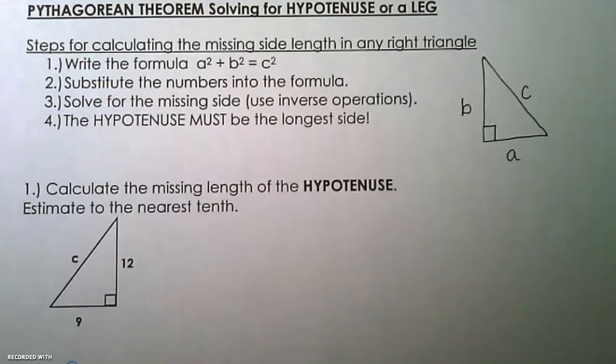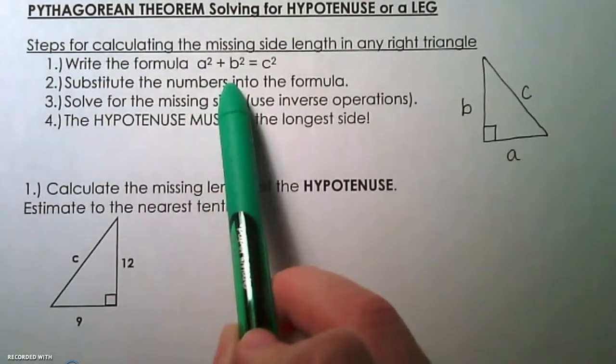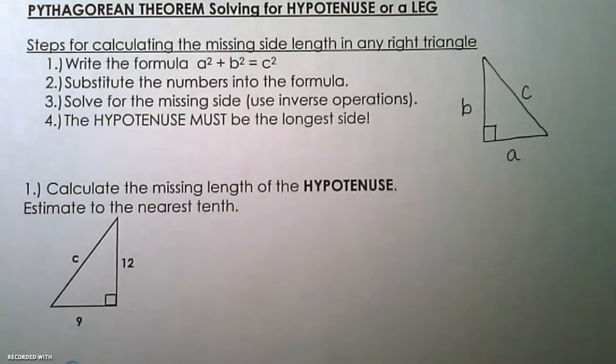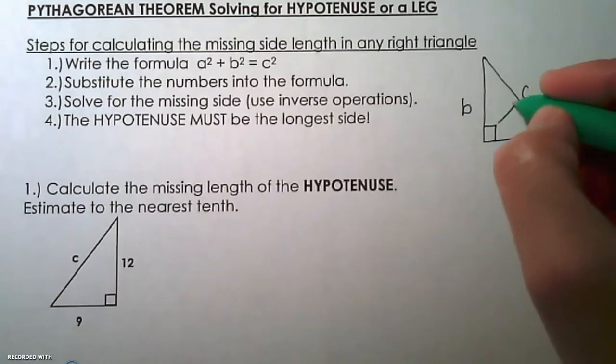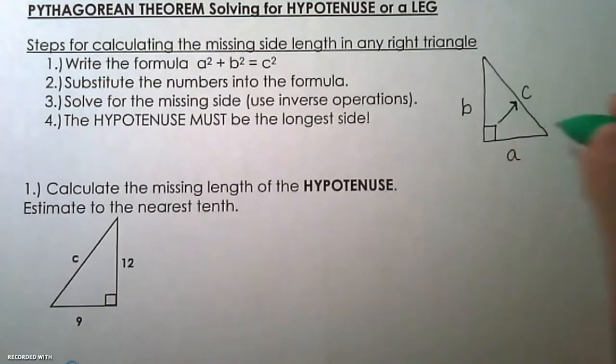So recall that the Pythagorean Theorem formula is a squared plus b squared equals c squared, where a and b are the legs, the two sides of the right triangle that form the right angle. So a and b intersect at 90 degrees. And then c is the hypotenuse, that's the longest side of the right triangle, and it's also the side that is directly across from the right angle.